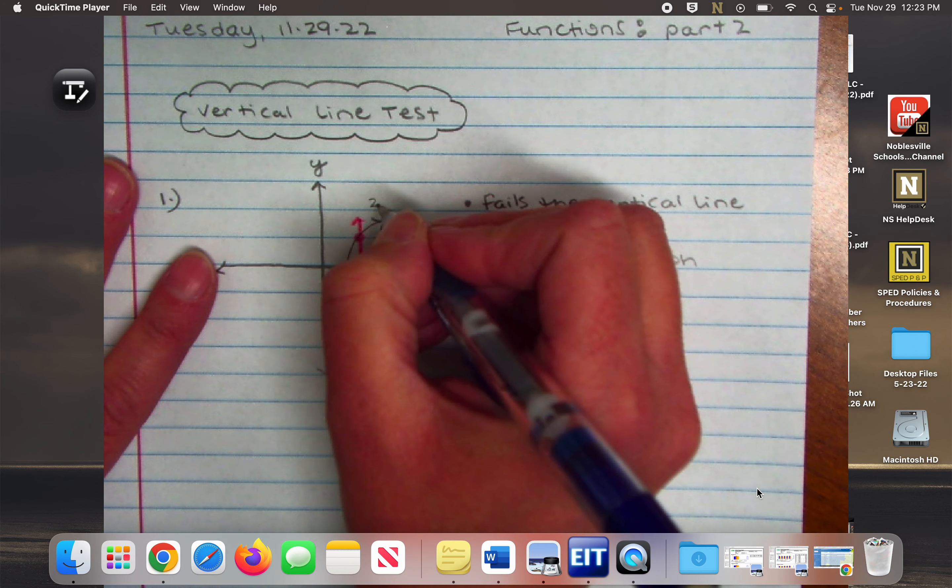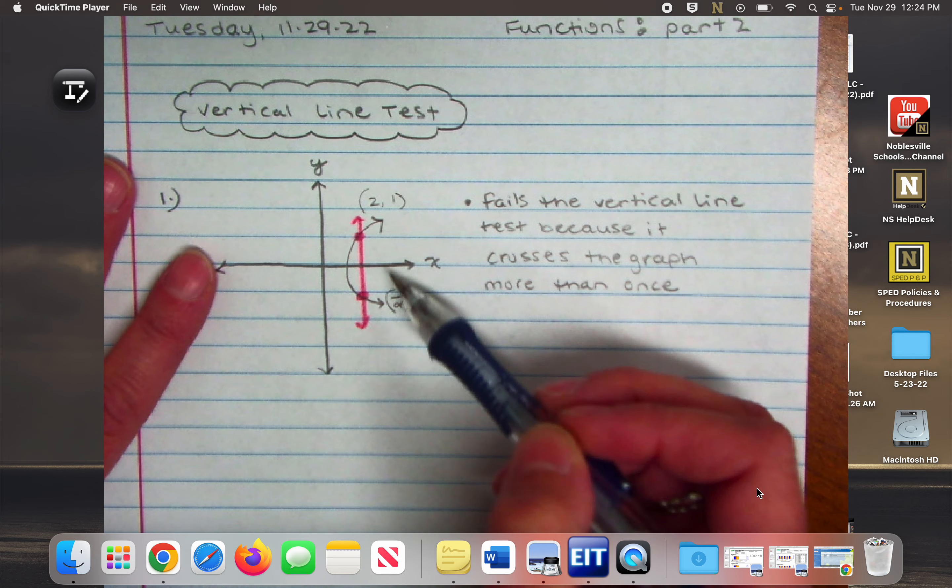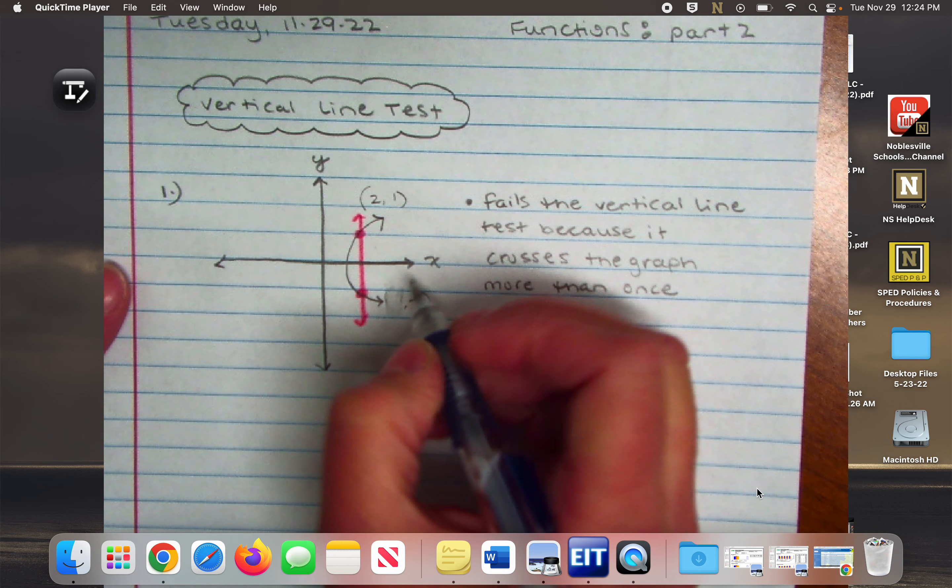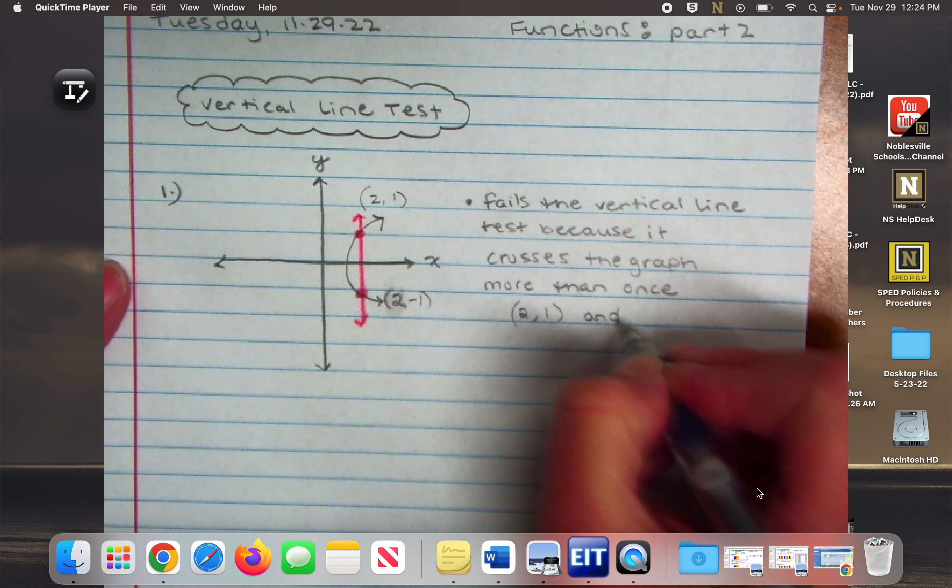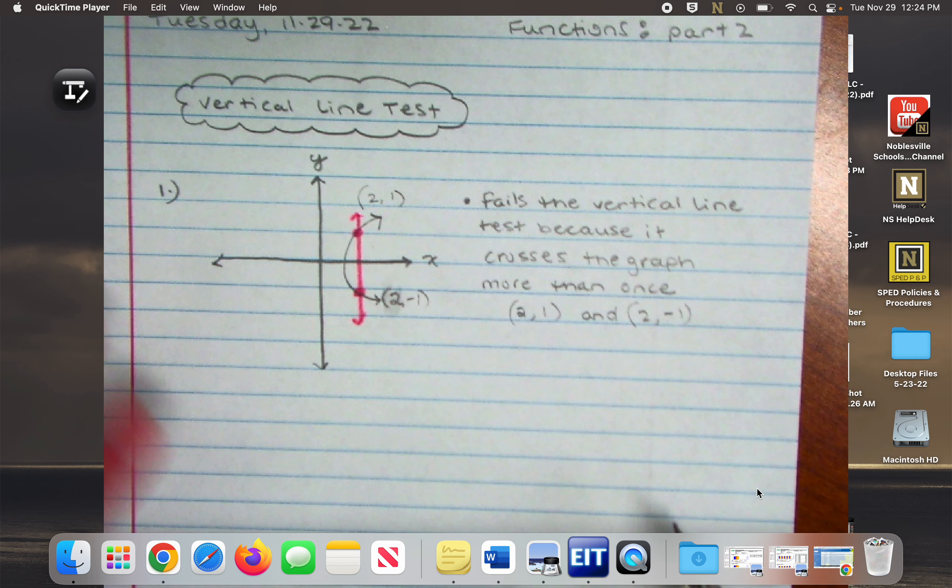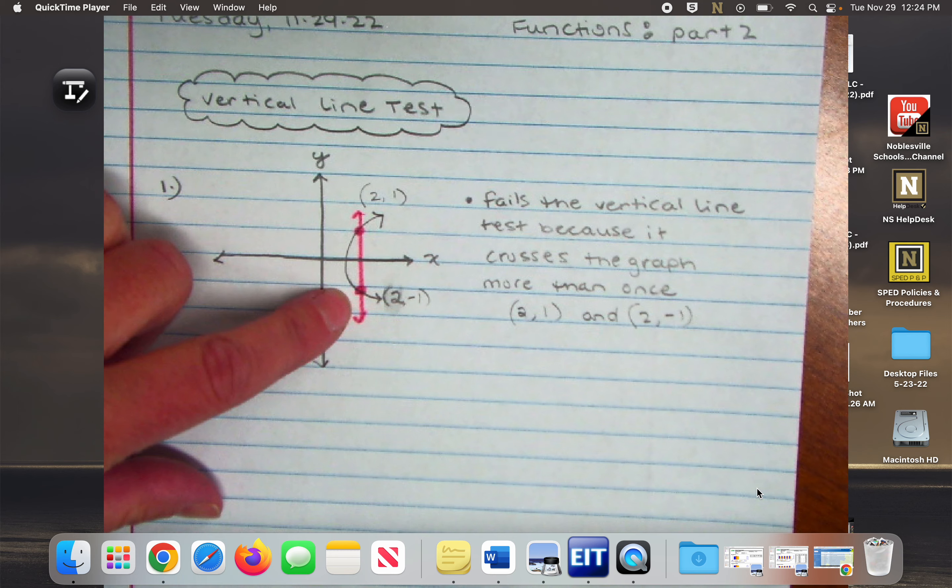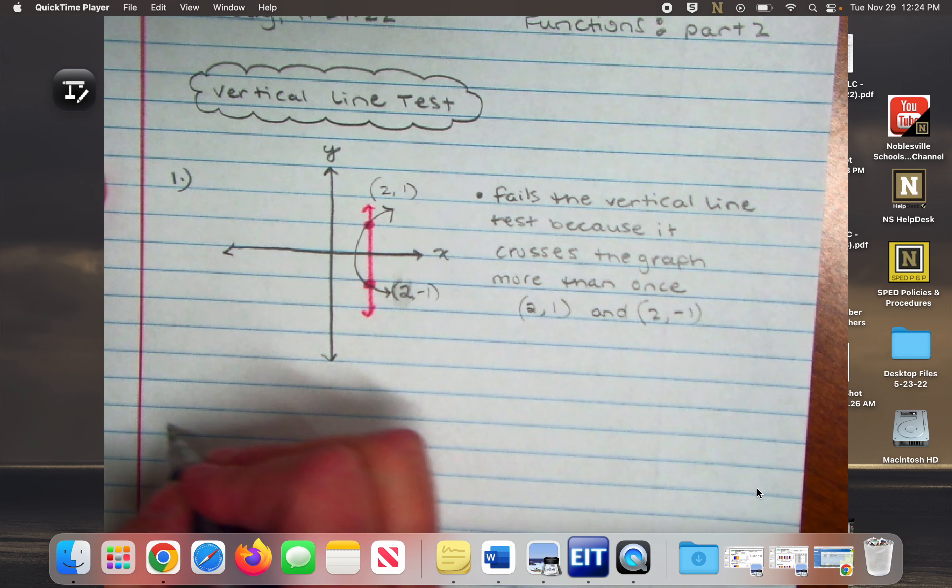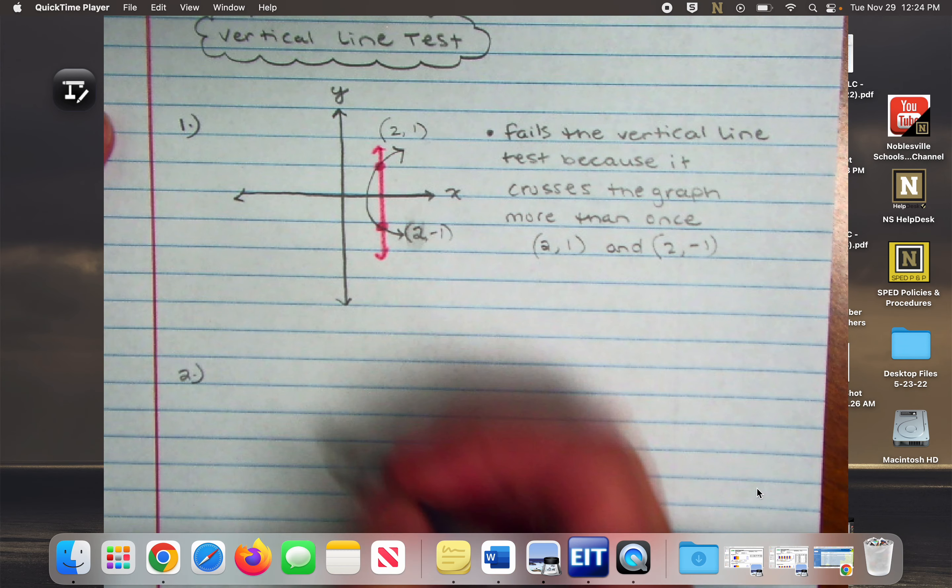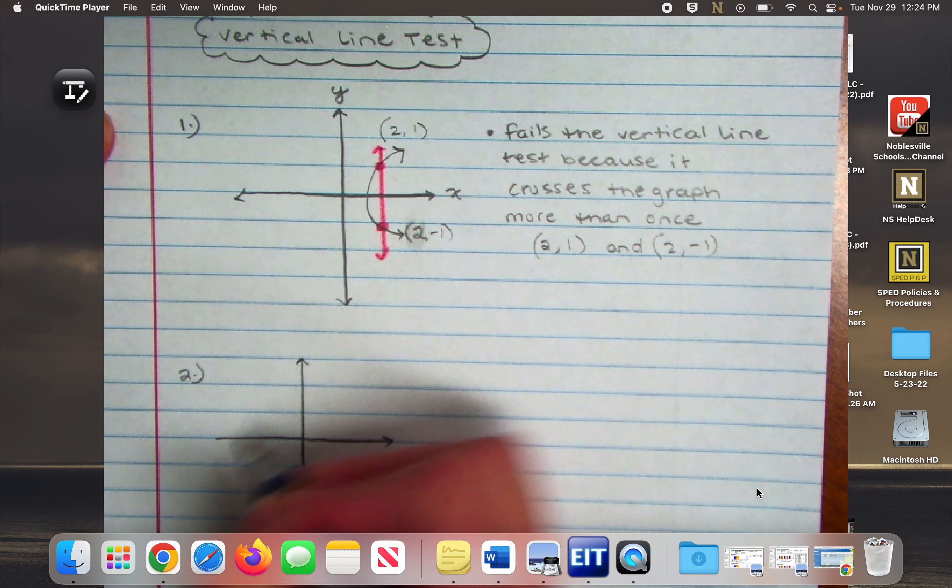So this fails the vertical line test because it crosses the graph more than once. I could say that this is ordered pair 2, 1, and this might be ordered pair 2, negative 1. But my x's are still both 2, and that's how I know that it fails. And often times they won't have actual ordered pairs with them, but as soon as you see it cross more than once, it fails. That is our vertical line test.